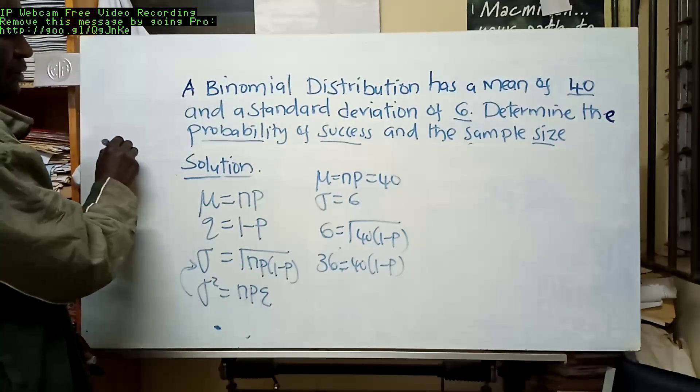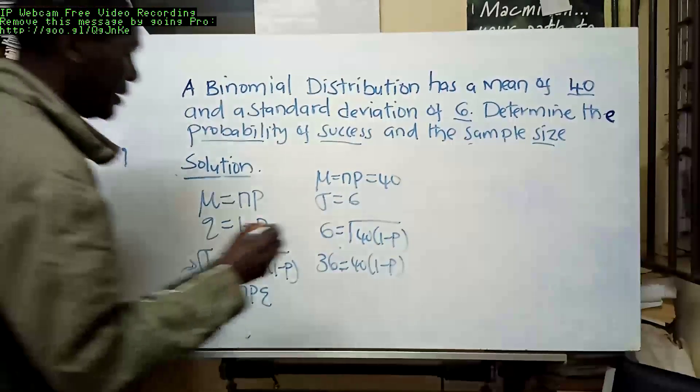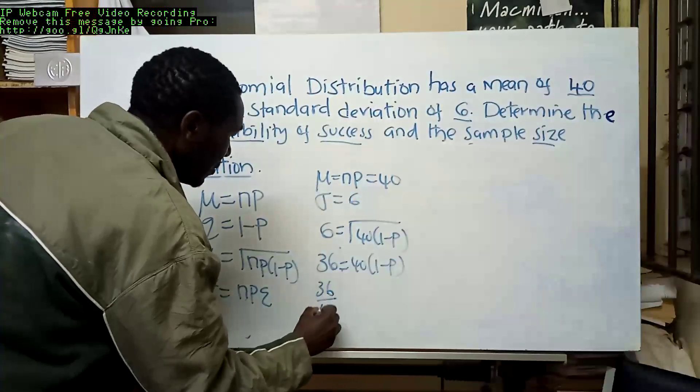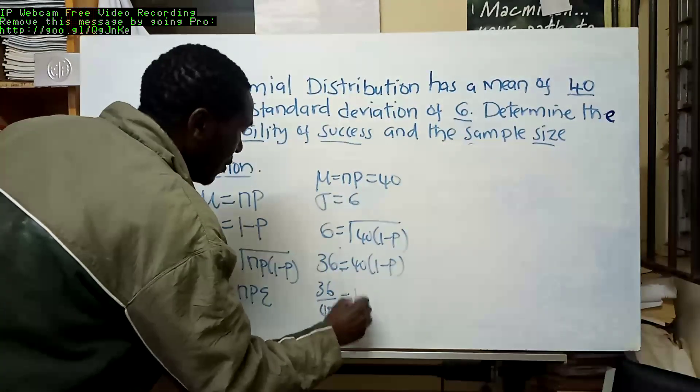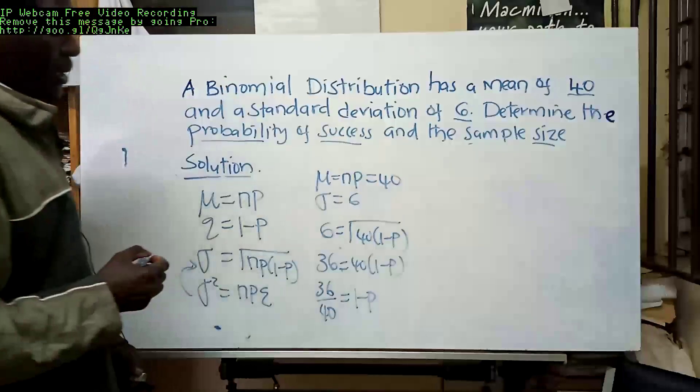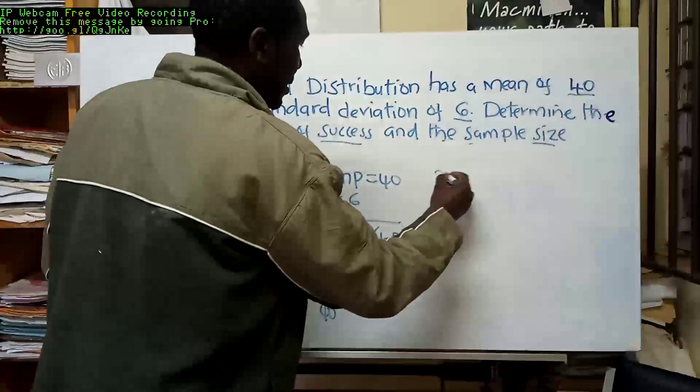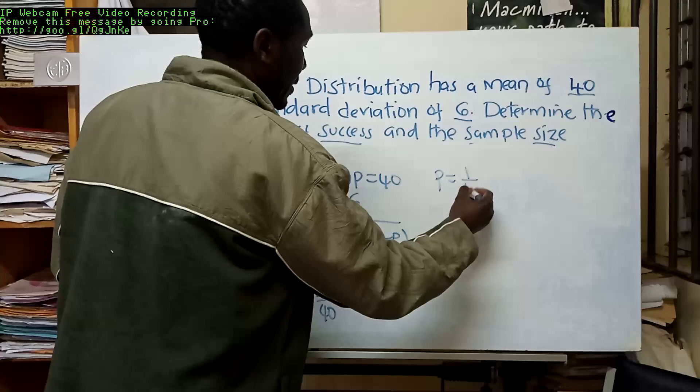We can rearrange that equation. Divide both sides by 40, we get 36 out of 40 equals 1 minus p. Rearranging it, we get that p is equal to 1 out of 10.